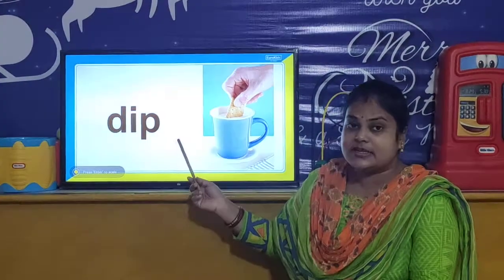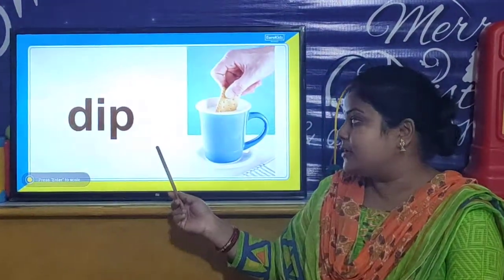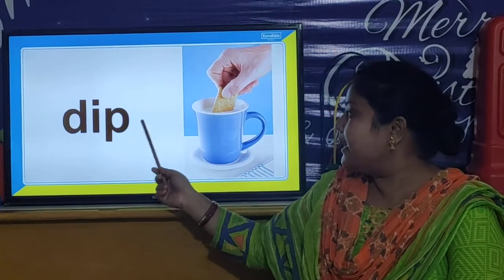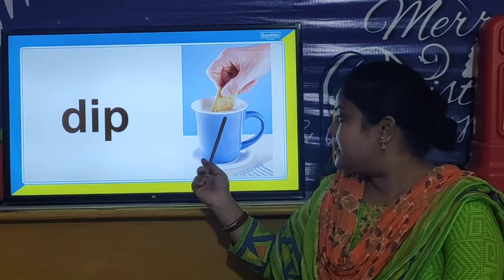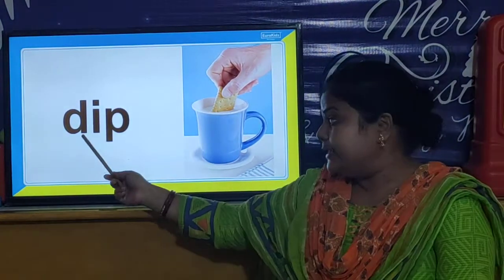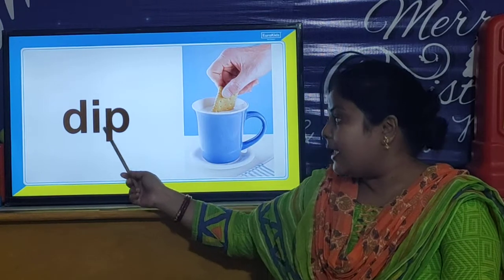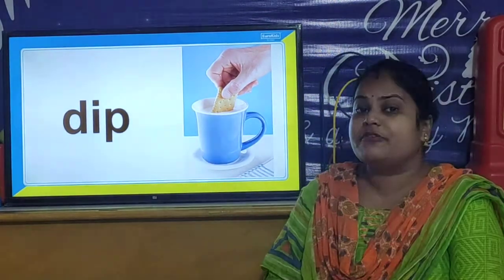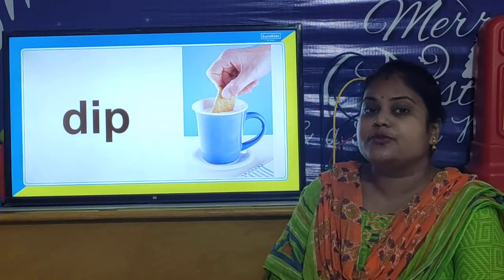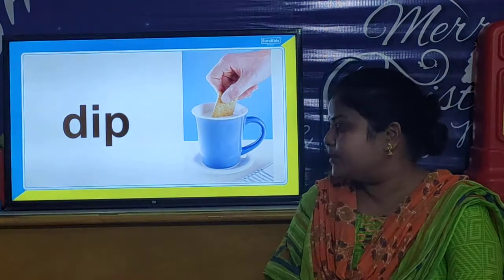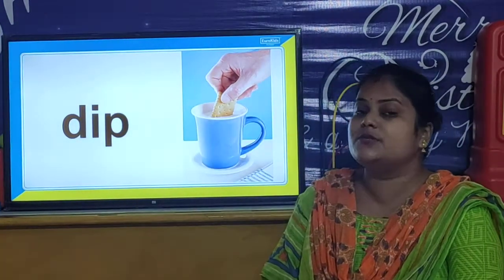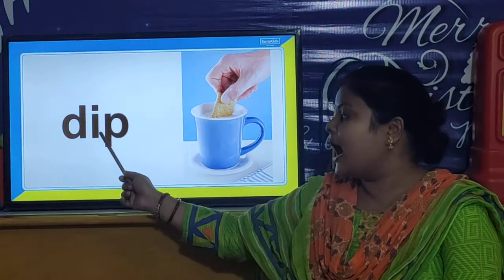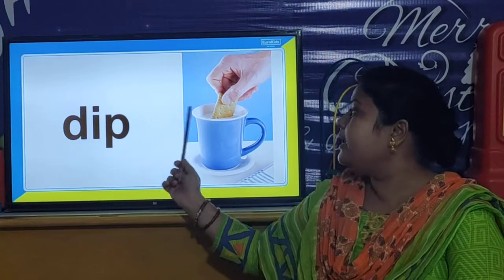Your first IP word is D-I-P, Dip. D-I-P, Dip. Children, you have to repeat with me. You have to repeat the words with the spelling. So D-I-P, Dip.